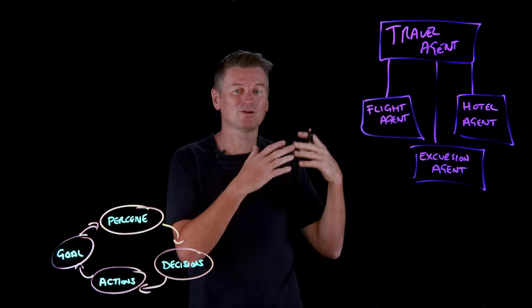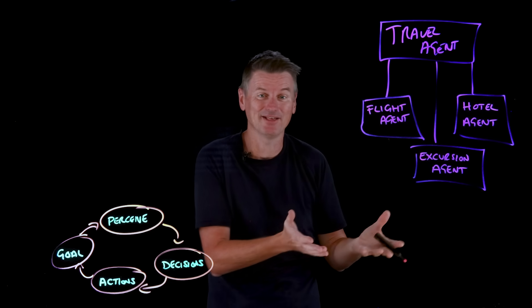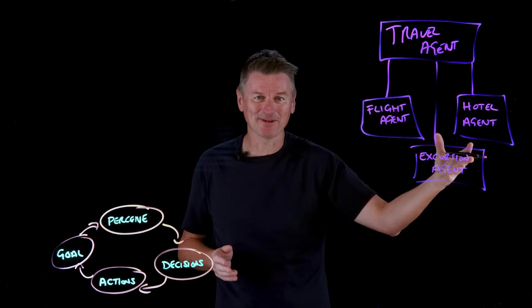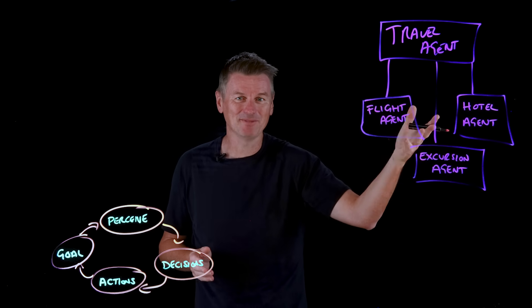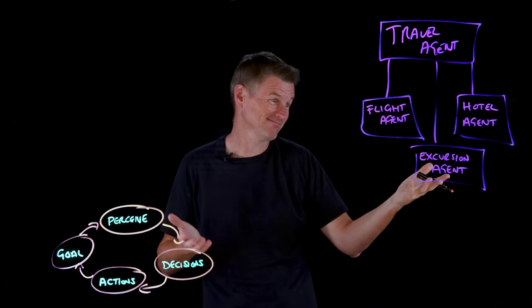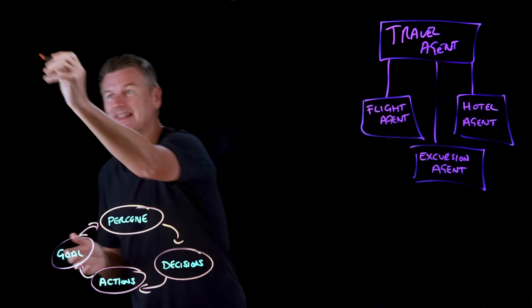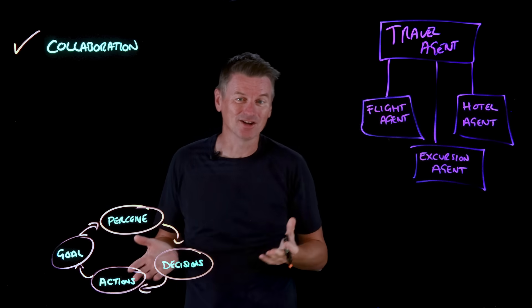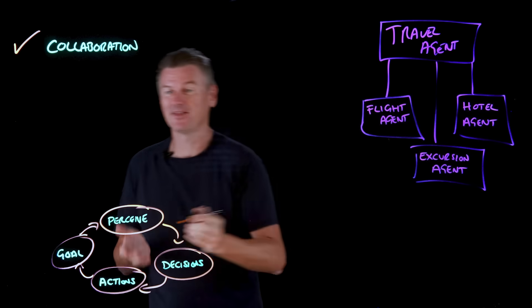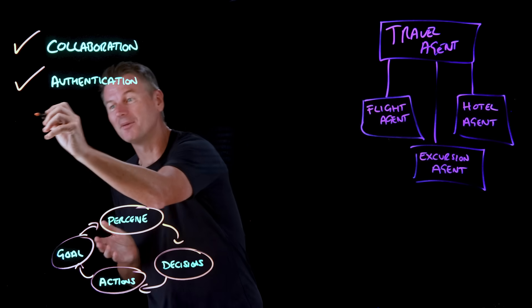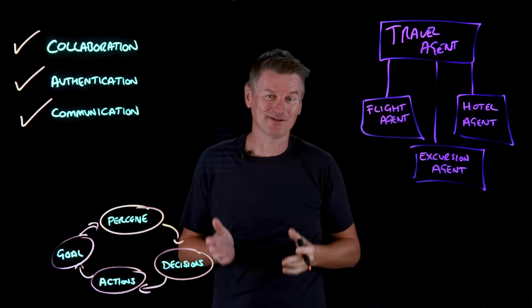You could just build all of these agents yourself and integrate them with some custom code. But what if you want to use somebody else's hotel agent without knowing how that agent communicates or how it works? That's not an easy task — unless there was a standard way for AI agents to work with each other: something that allowed collaboration, handled authentication, and defined a common communication method.